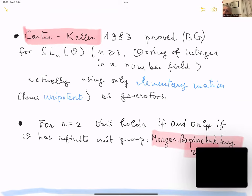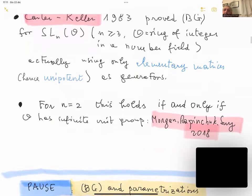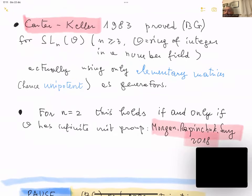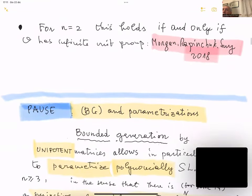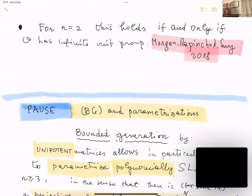Carter and Keller proved bounded generation using only elementary matrices, in particular unipotent matrices — a distinction that will be relevant in the sequel. For n = 2, the property holds not for SL(2,ℤ) but for other rings of integers, and it holds as soon as the ring of integers has an infinite unit group, as shown by Morgan, Rapinchuk, and Sury in 2018.